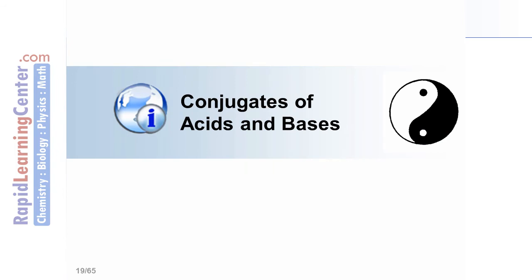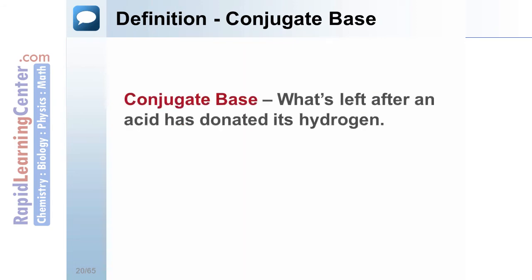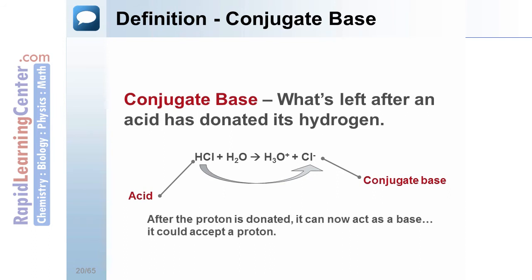What are acid and base conjugates? A conjugate base is what's left over after an acid has donated the hydrogen cation. For example, HCl is the acid. After it donates the hydrogen to water, it now is Cl-1. This is the conjugate base. After the proton is donated, it can now act as a base. It can accept a proton. This is why it's called the conjugate base.